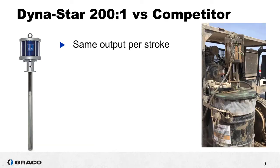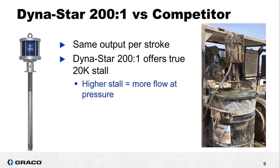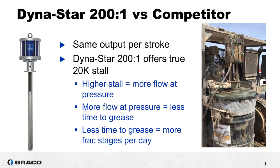One detail that has not been stated yet is that both pumps have the same output per stroke and now we've already shown you that the two pumps have functionally the same ratio but because our pumps have a higher air pressure rating we can pump more grease. This means that it takes us less time to pump the grease that you need and that means that you get more frack stages per day because you spend less time waiting on your grease pump.